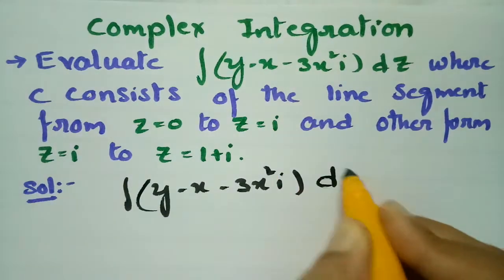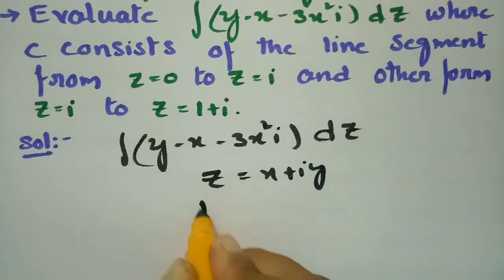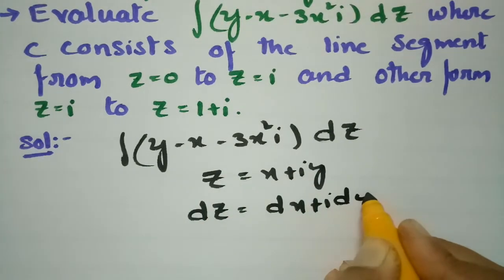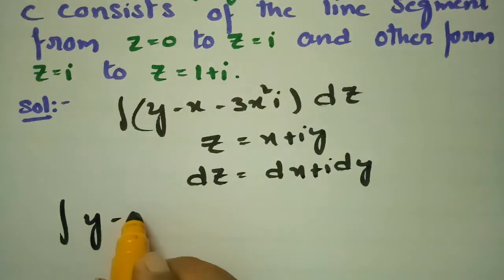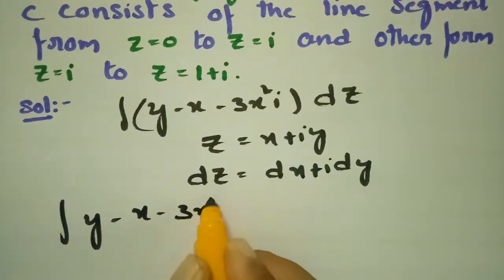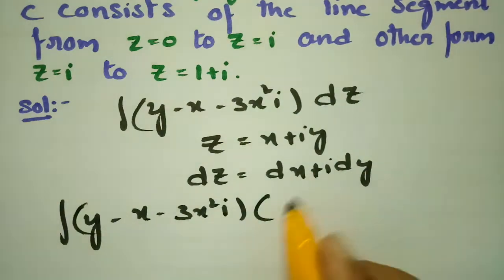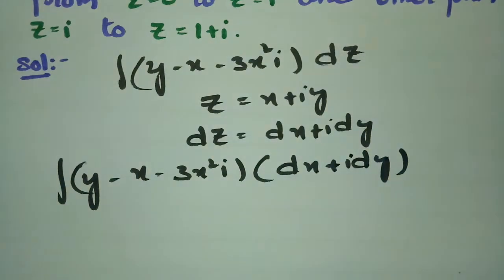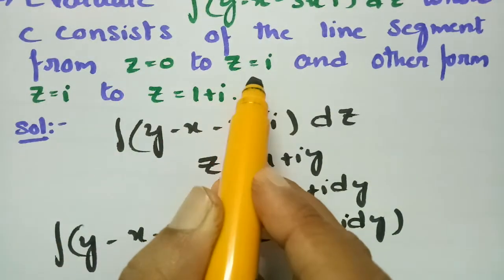The integral is (y - x - 3x²i) dz. As we know, z = x + iy, so dz = dx + i·dy. The integral becomes (y - x - 3x²i) into (dx + i·dy).